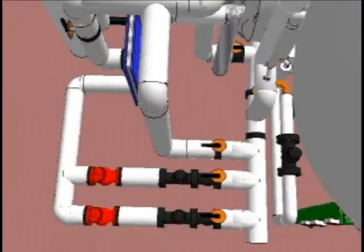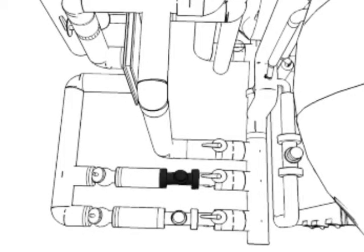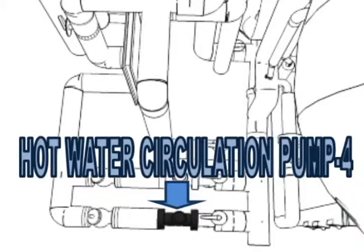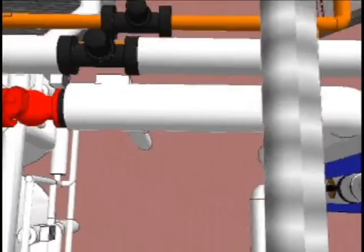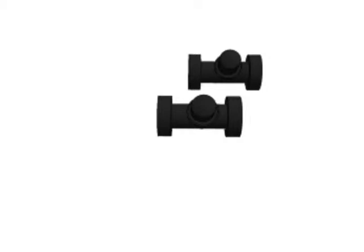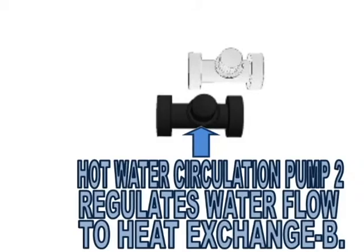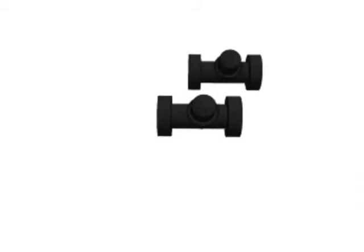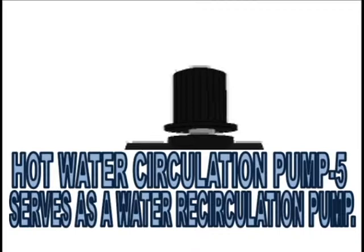On the floor near DA1 is hot water circulation pump 3 and hot water circulation pump 4. Closer to the ceiling is cold water circulation pump 1 which sends water to the Siemens. Nearby is hot water circulation pump 2 which regulates the water flow to heat exchange B. Near the back wall is hot water circulation pump 5, which serves as a water recirculation pump.